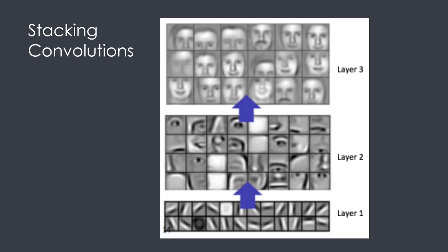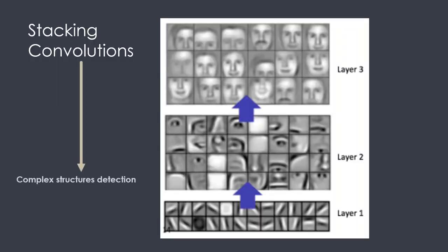We can see here someone frowning, or maybe just a bird, or someone smiling. The more we stack convolutions, the more we are able to detect complex structures.